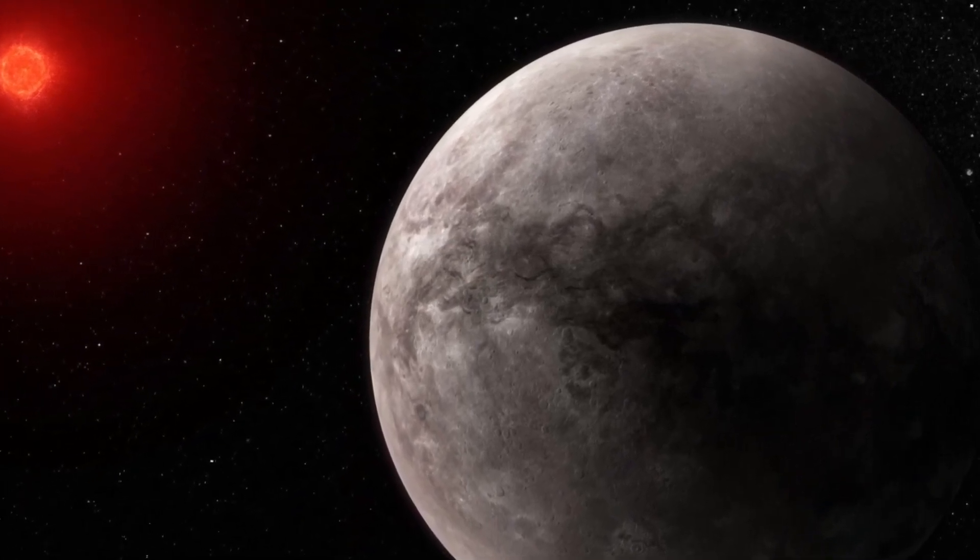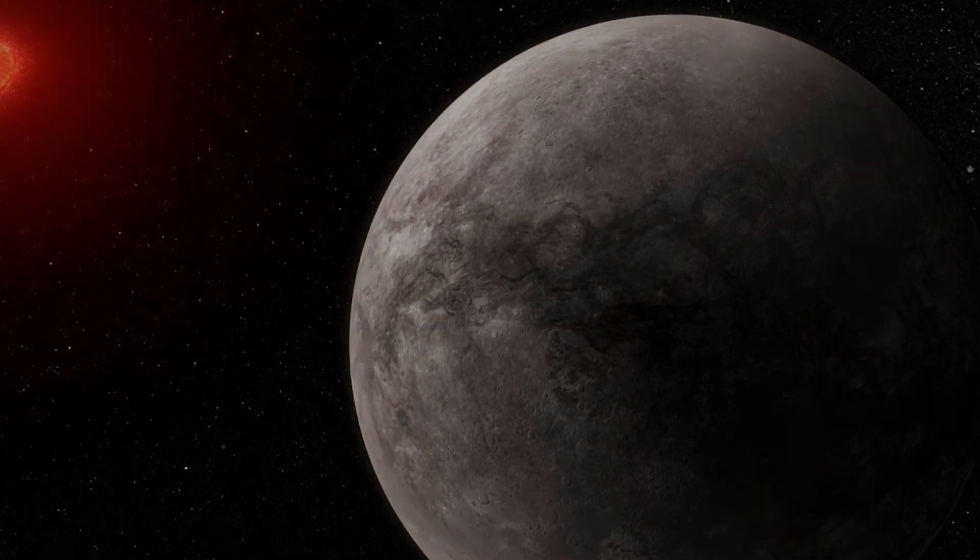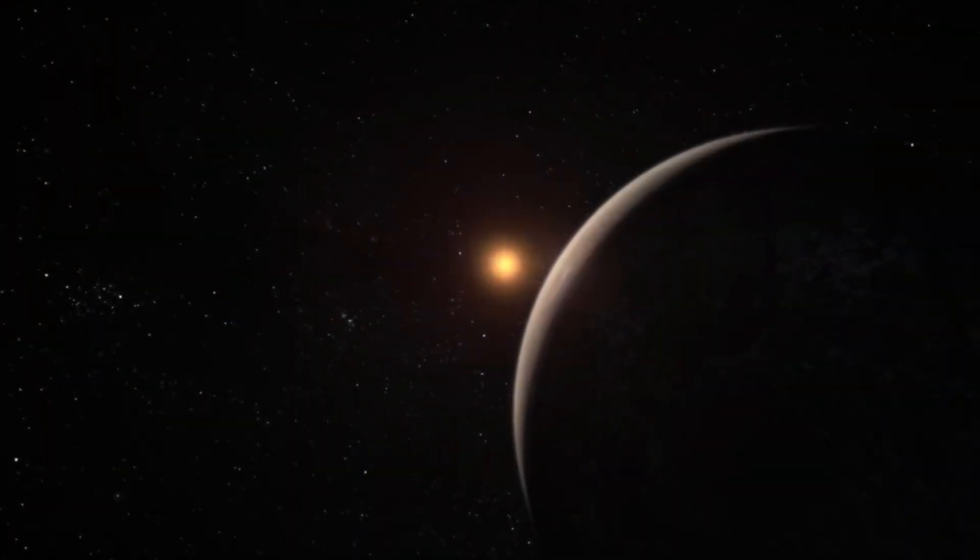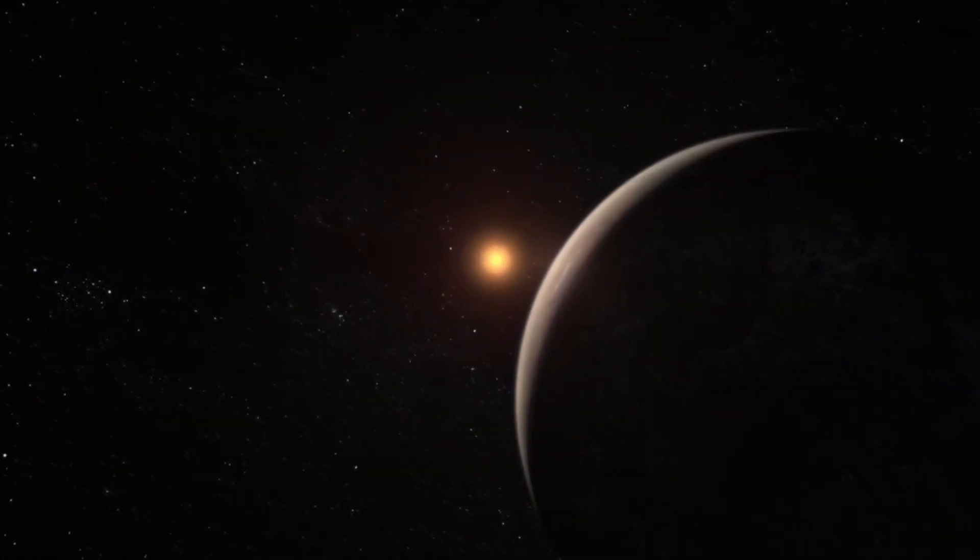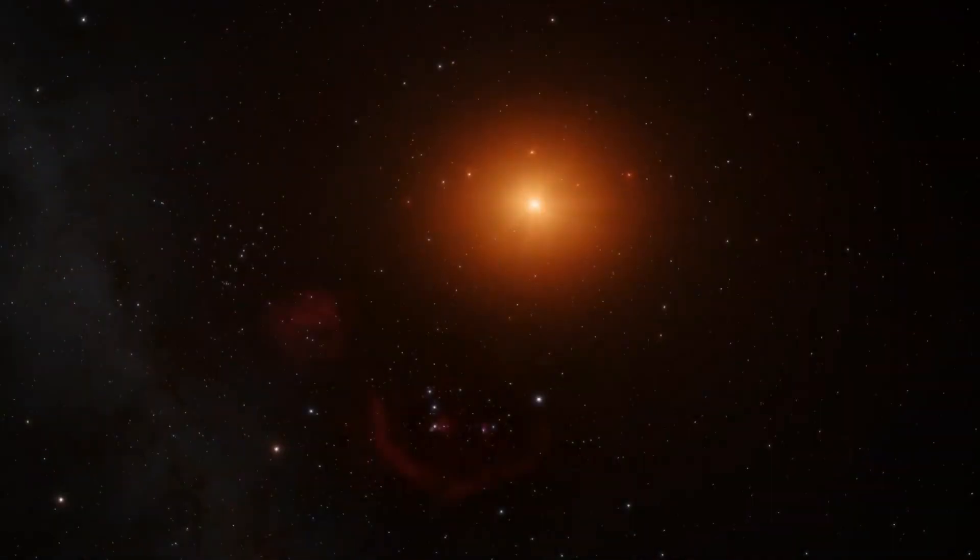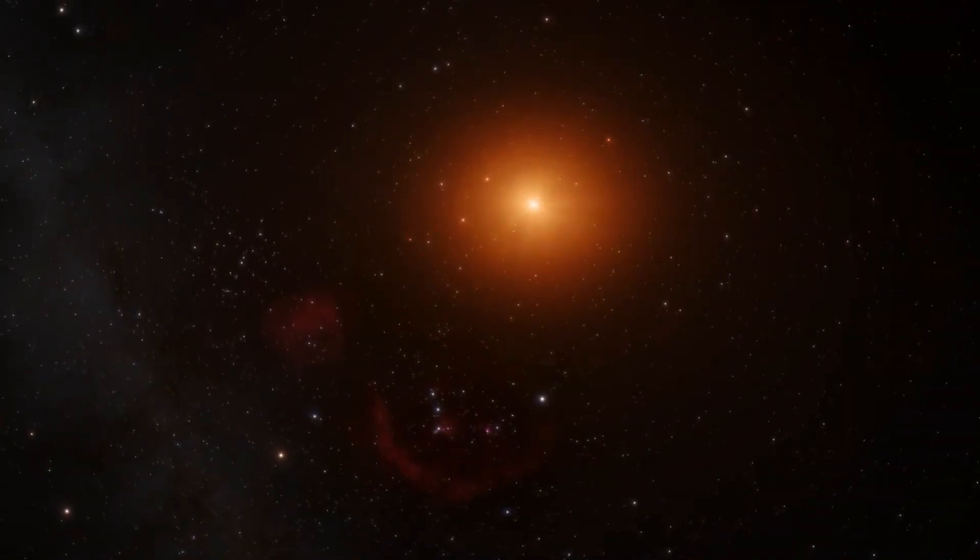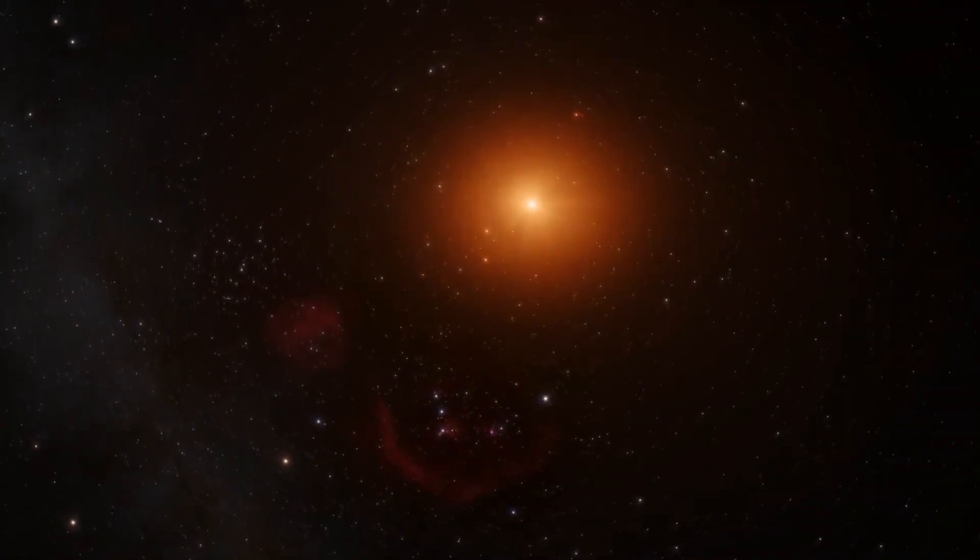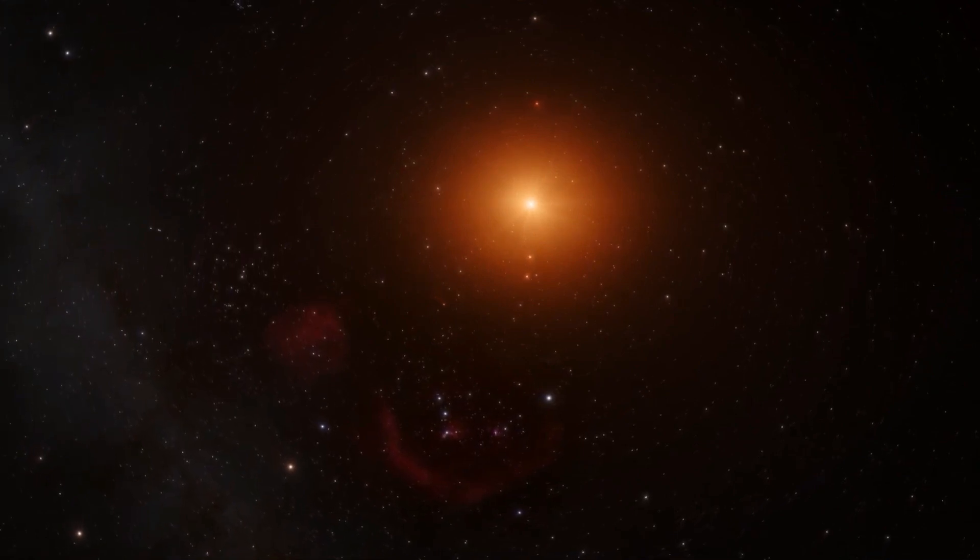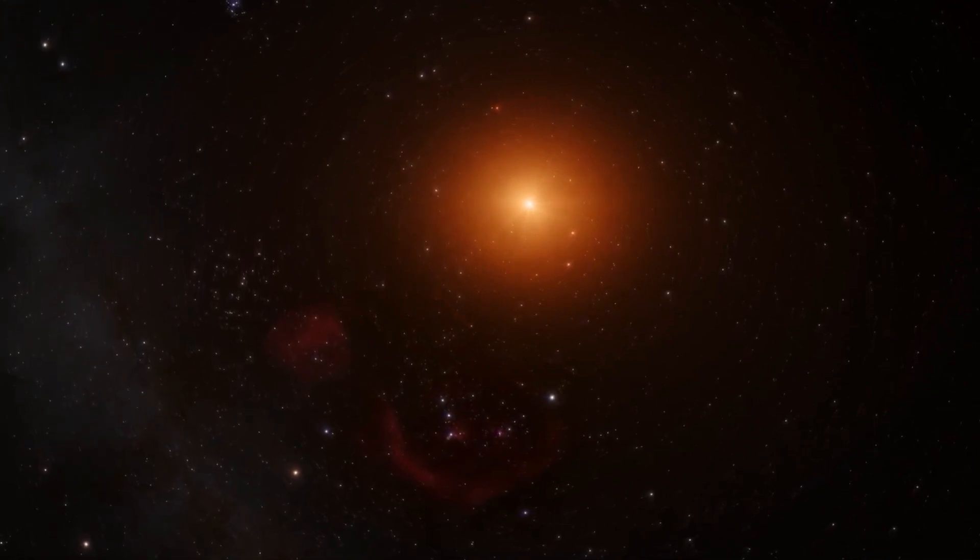This is the first time that light has been seen coming from a rocky exoplanet that's about the same size and temperature as the planets in our own solar system. This result is an important step in the process of figuring out if planets that orbit small, active stars like TRAPPIST-1 can keep atmospheres that are needed for life.